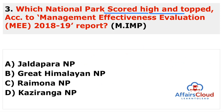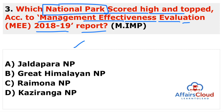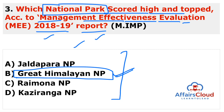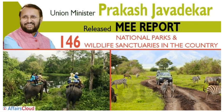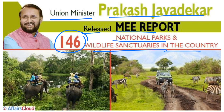Next question: which national park scored highest and topped according to the Management Effectiveness Evaluation (MEE) 2018-19 report? This report was released by the Ministry of Environment, Forest and Climate Change — Union Minister Prakash Javadekar — covering approximately 146 national parks and wildlife sanctuaries. The answer is Great Himalayan National Park.